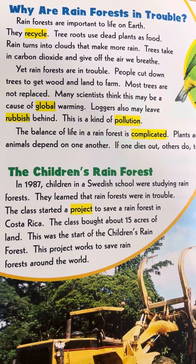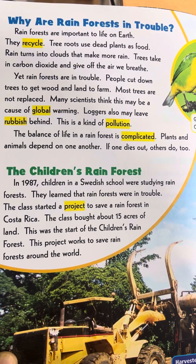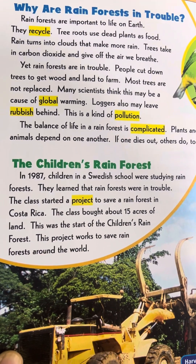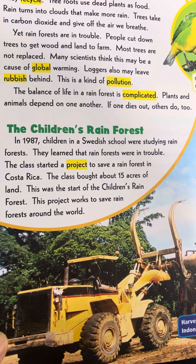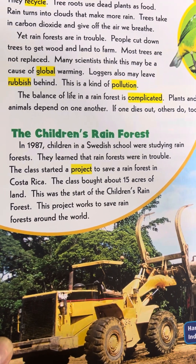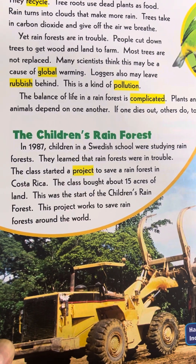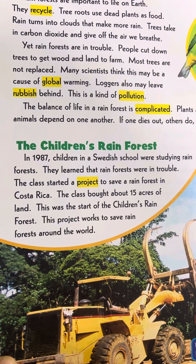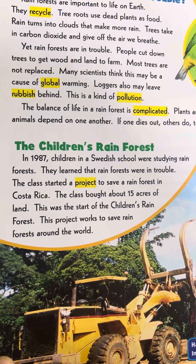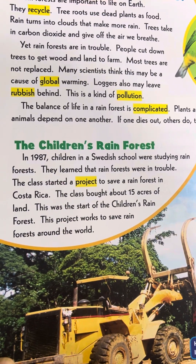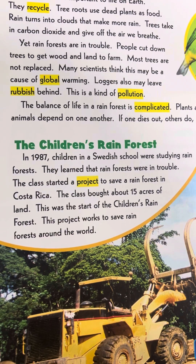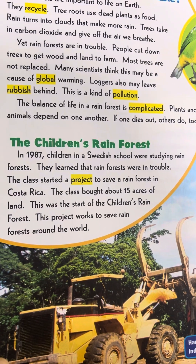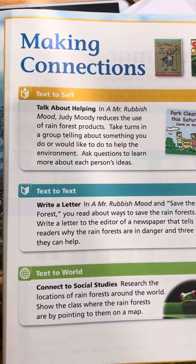The balance of life in a rainforest is complicated. Plants and animals depend on one another — if one dies out, others do too. In 1987, children in a Swedish school were studying rainforests and learned they were in trouble. The class started a project to save a rainforest in Costa Rica and bought about 15 acres of land. This was the start of the Children's Rainforest, a project that works to save rainforests around the world.